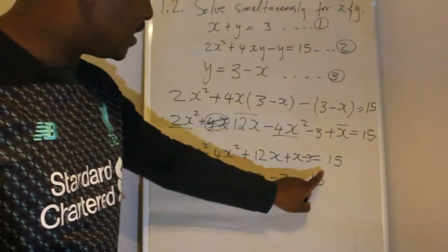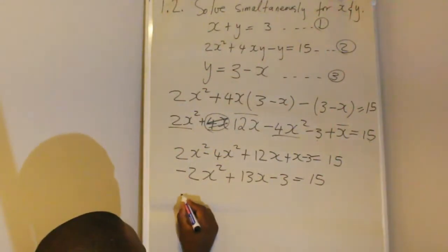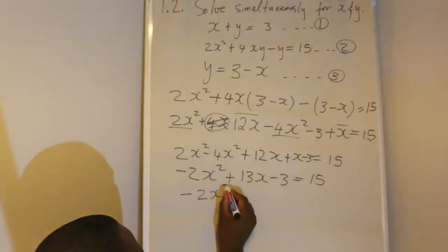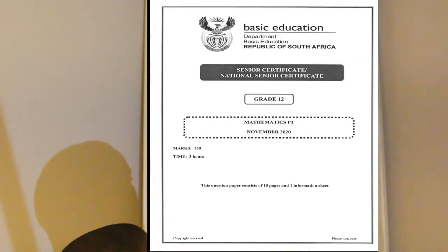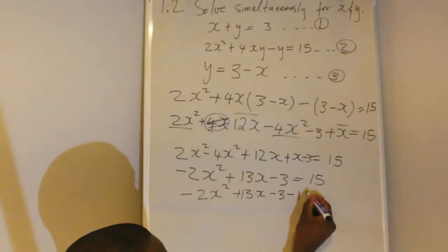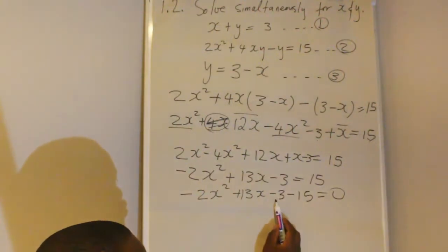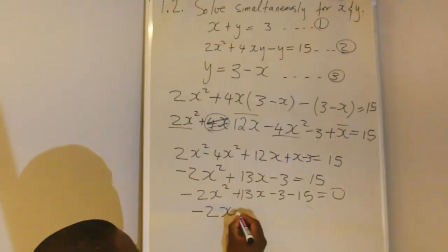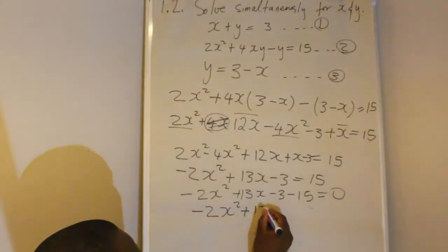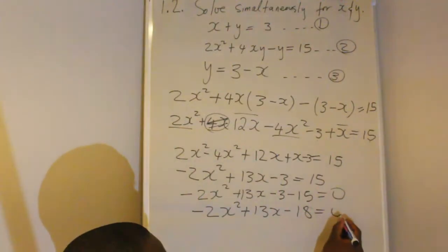On the next step, transpose the 15 to this side. We're left with negative 2x squared plus 13x minus 3 minus 15 equals 0. Grouping the constants: negative 2x squared plus 13x minus 18 equals 0.